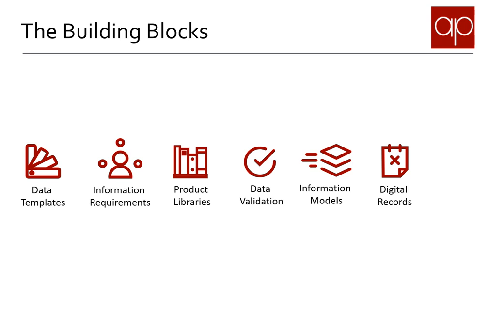The digital record allows the asset data to be directly updated or updated from a different application. The procedure planner is another data library, this time of tasks and procedures that can be mapped against a master library of asset types. These may include specialist libraries like SFG20 or manufacturer's recommended procedures.